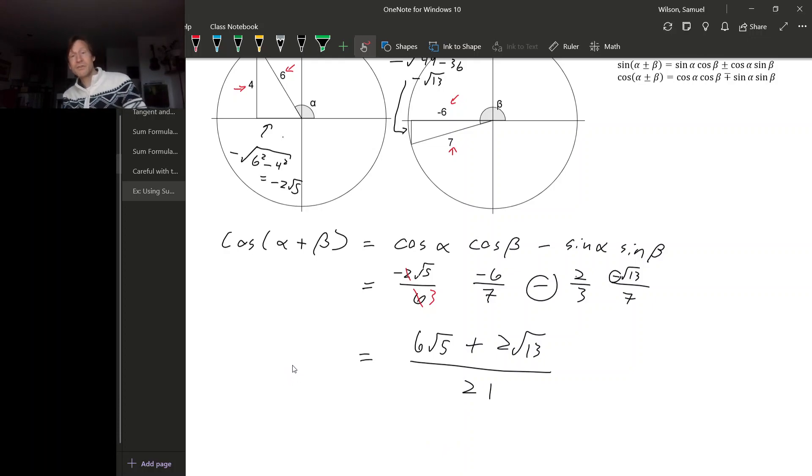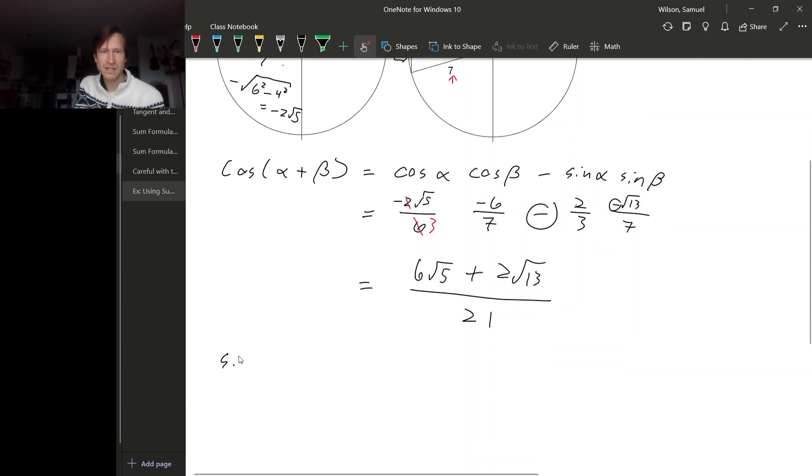For sin(α + β), of course it's going to be pretty similar. Using the addition formula for sine, that's sin(α)cos(β) + cos(α)sin(β). So sin(α) was 2/3, cos(β) was -6/7. cos(α) was -√5/3—yeah, I've simplified the fraction already.